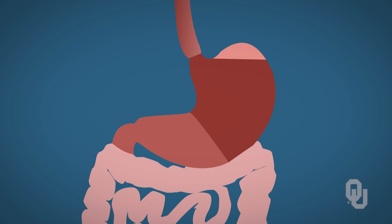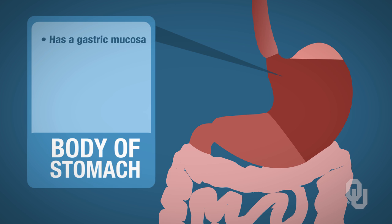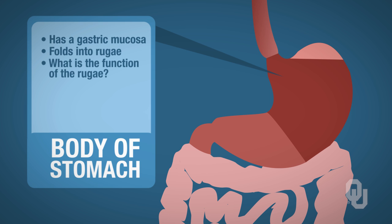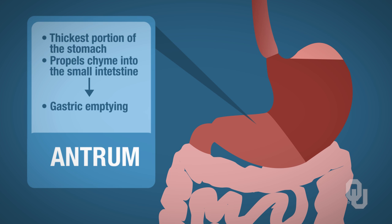Let's look at the components of the stomach. There's the fundus, the upper part of the stomach, which has a thin wall that easily expands and contains gastric pits. Below the fundus is the body of the stomach, which has a gastric mucosa that folds into what are called rugae — consider what the function of the rugae might be. The antrum is the thickest portion of the stomach; when it contracts, it propels the chyme into the small intestine, which we call gastric emptying.